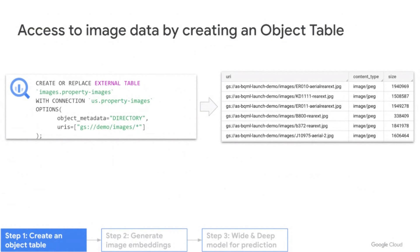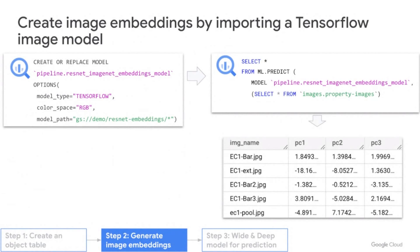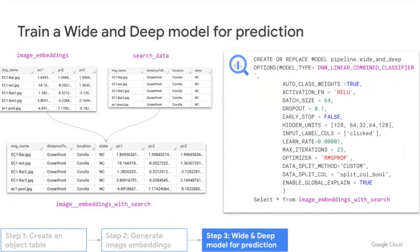For the second step, they imported a vision model to generate image embeddings. This translates images into a series of numbers that you can use as inputs for machine learning models. They used a TensorFlow model called ImageNet to generate those embeddings. Once the model is imported, you just use ml.predict to generate the image embeddings. In this case, they used principal component analysis to further reduce those embeddings down to 39 features for further analysis.